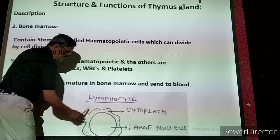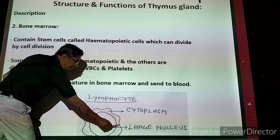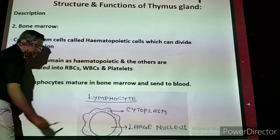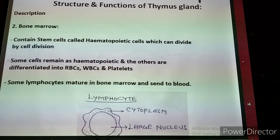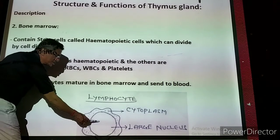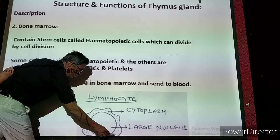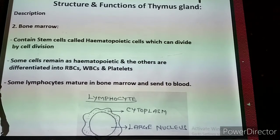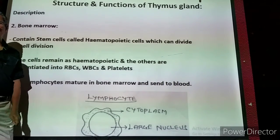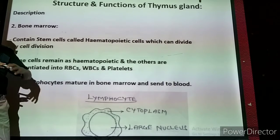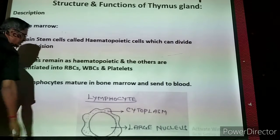A lymphocyte is a white blood cell. It is like an amoeba — having irregular shapes and a large nucleus in the center, occupying about 90% of the cell. A very thin layer of cytoplasm is present at the peripheral region. Any white blood cell having a large nucleus near the center is called a lymphocyte.